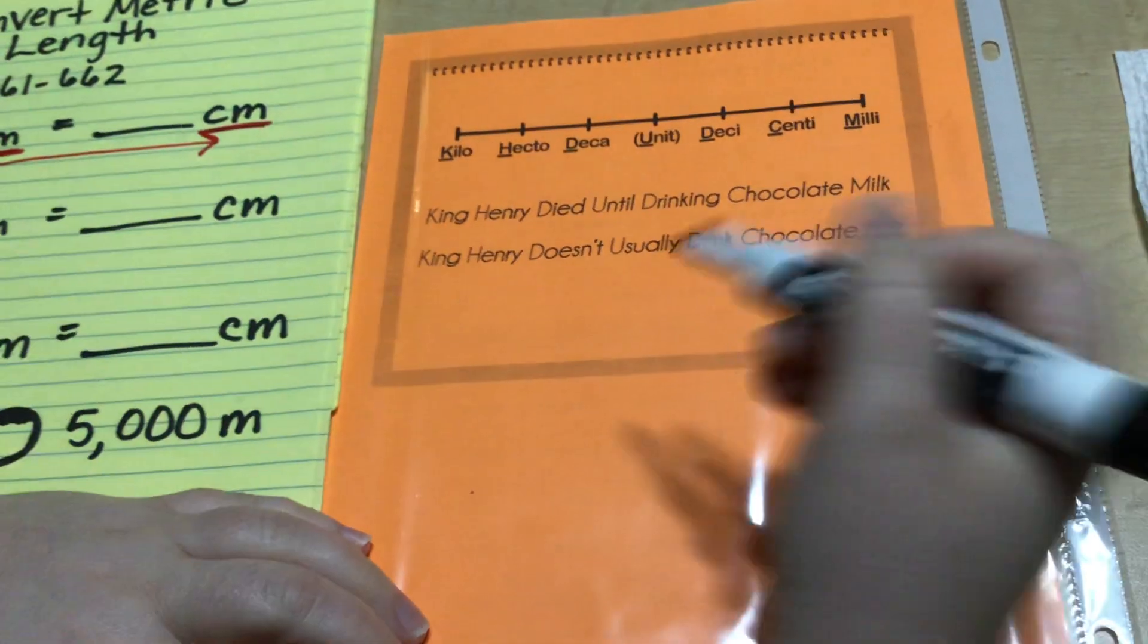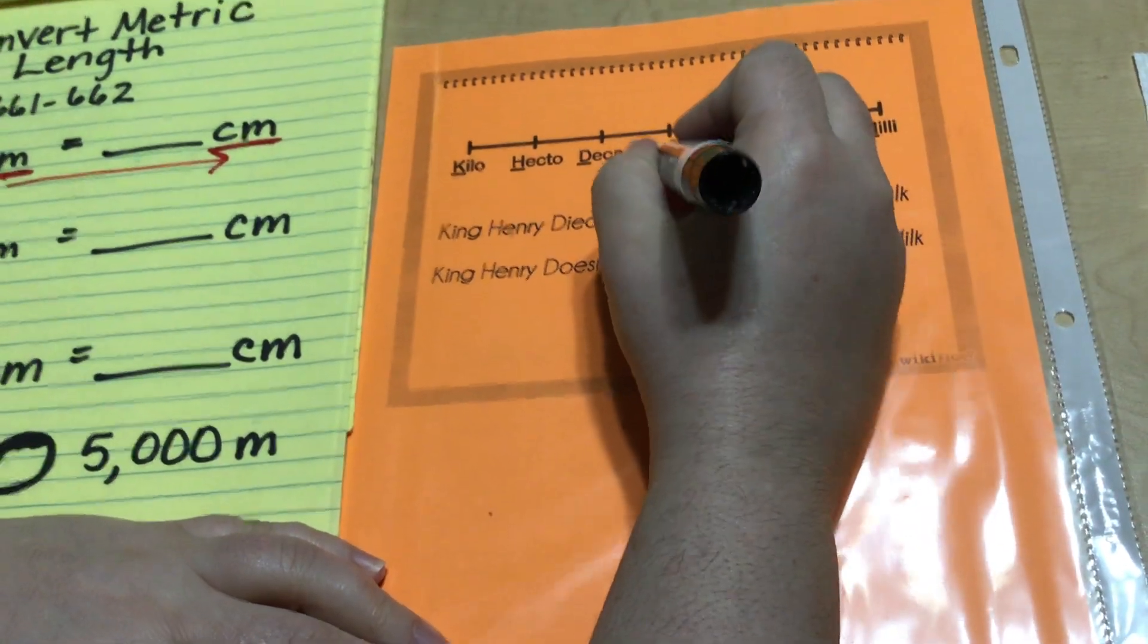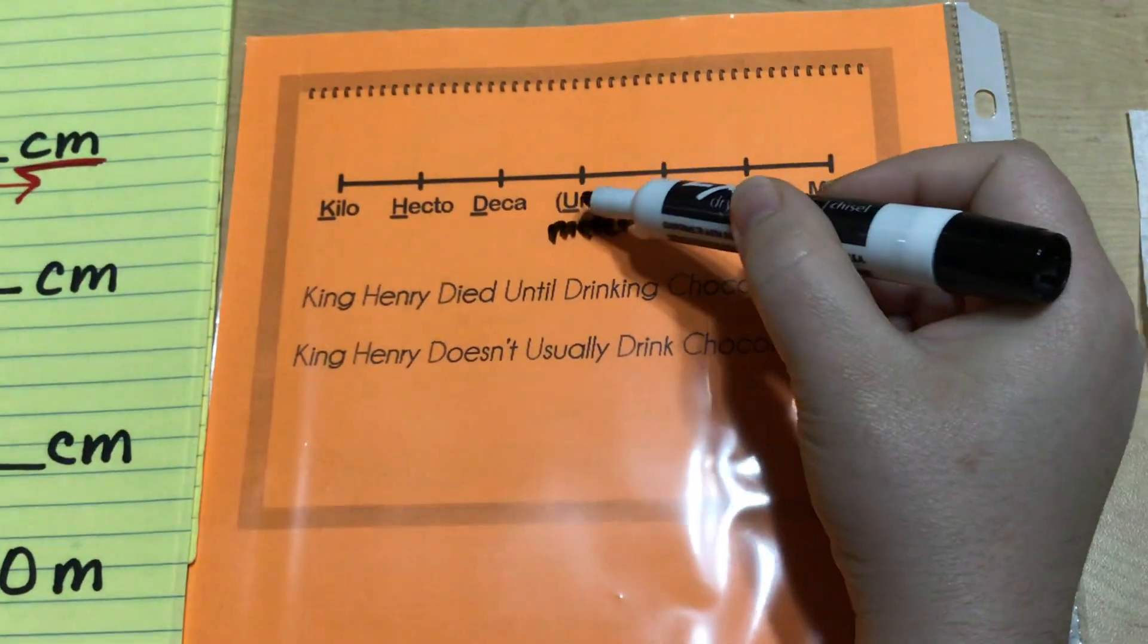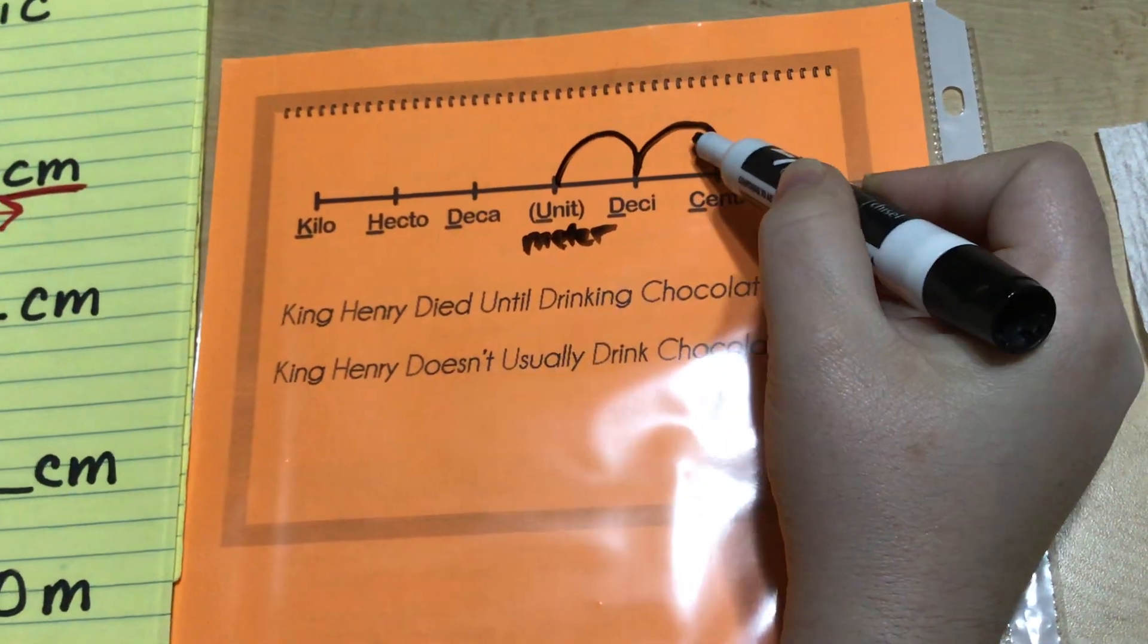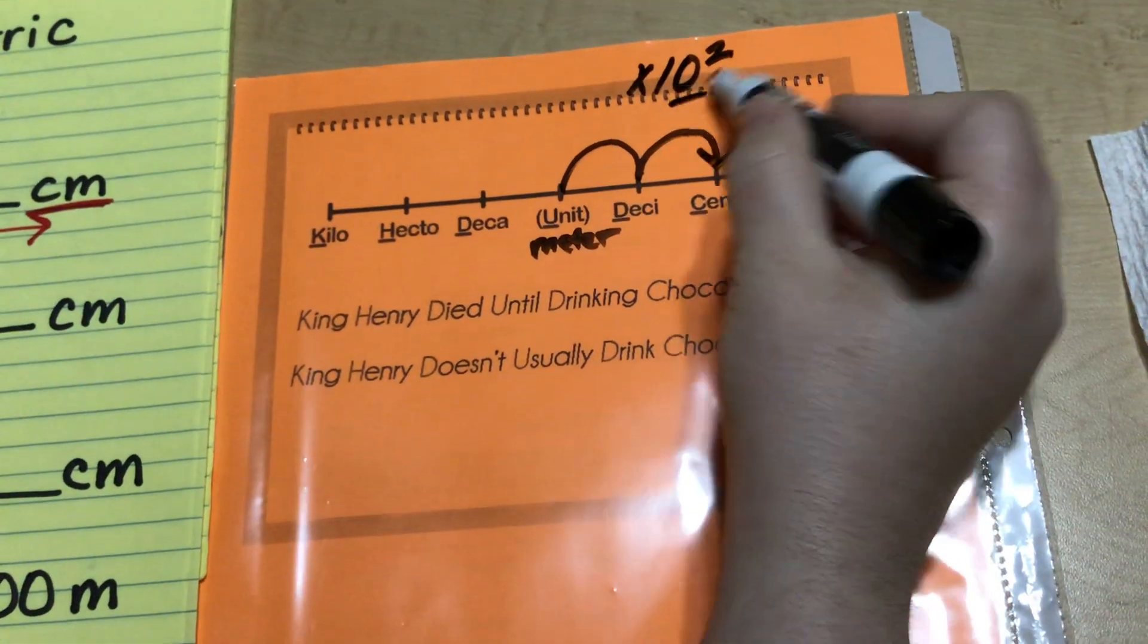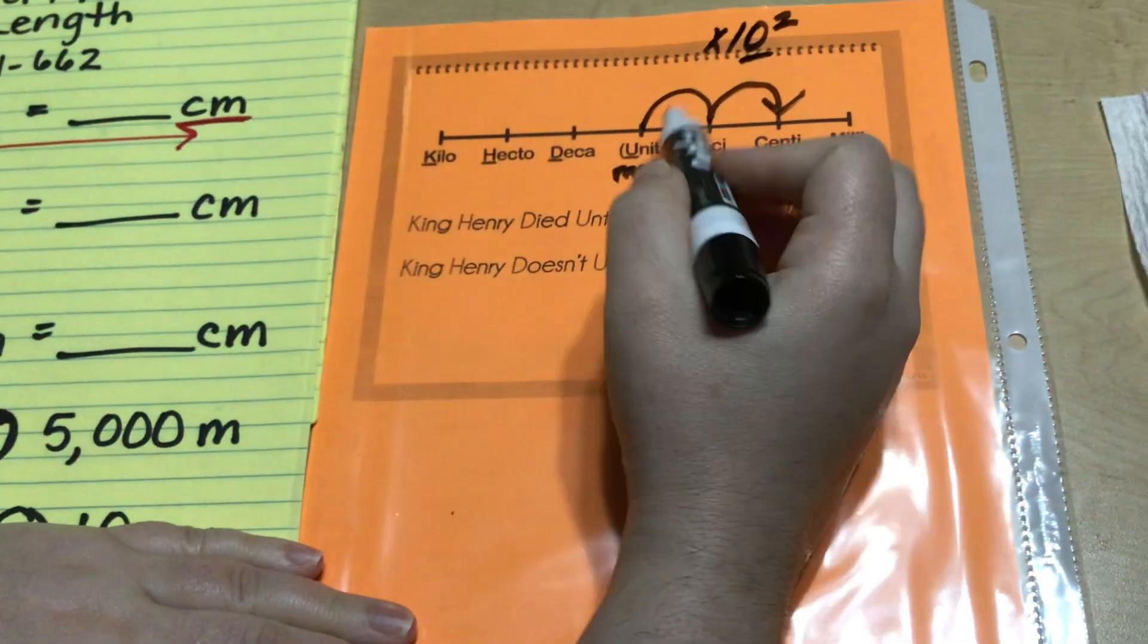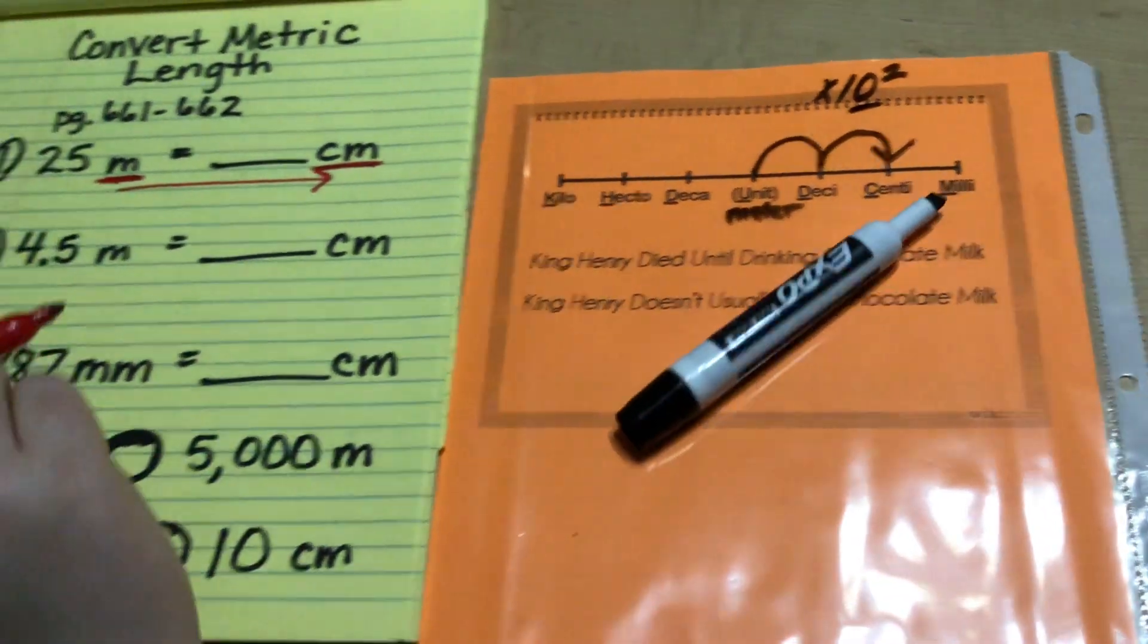Come to your little chart here. I'm gonna write right on my chart with a dry erase. If I'm going from my unit which since we're doing length the unit is meters, so we go from meters to centimeters. So we jump one jump, two jumps to the right.